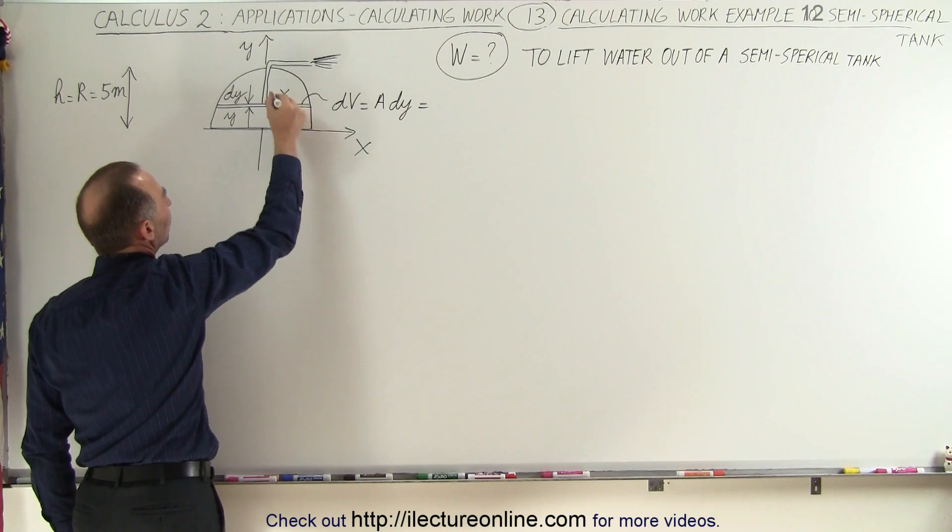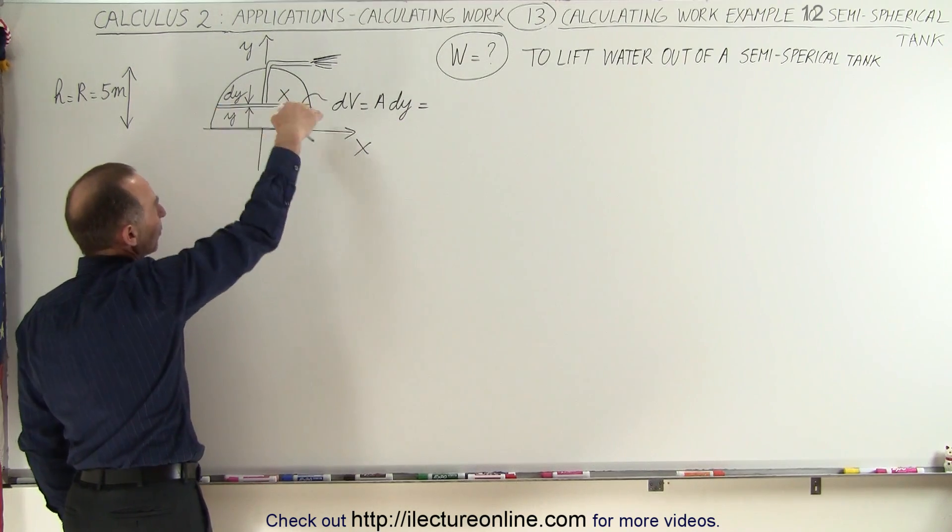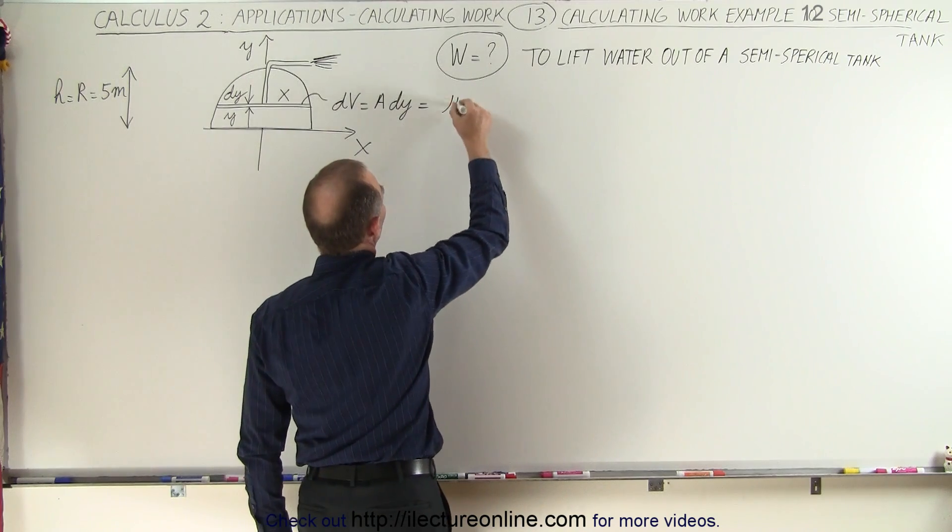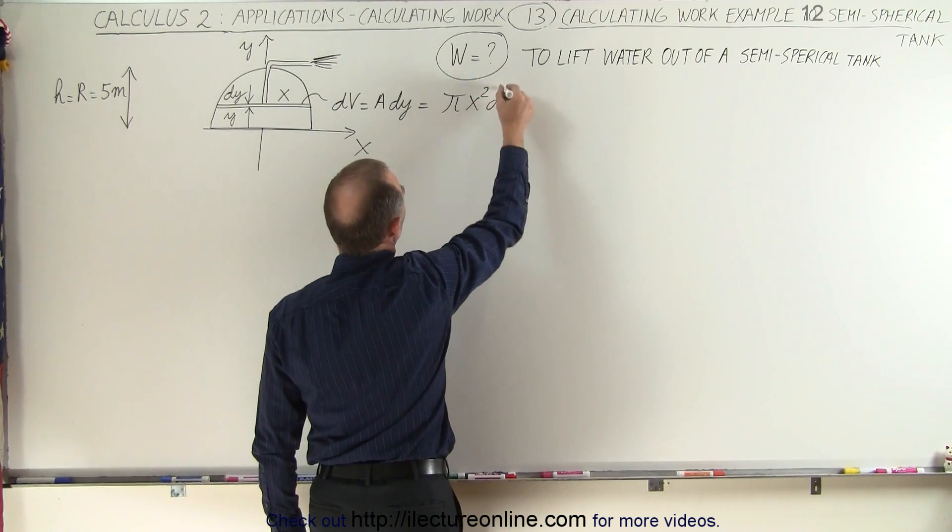And here this would be x, so the area of that would be π r² or π x². So this is π x² dy.